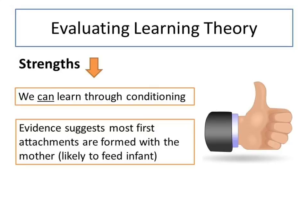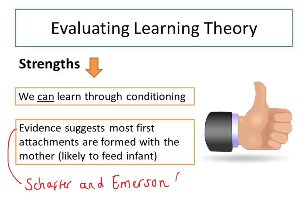Evidence has demonstrated that first attachments are usually formed between an infant and their mother. And as the mother is most likely to be feeding the infant and providing physical care, this provides some support for the theory. Schaefer and Emerson found that 65% of the infants in their longitudinal study formed their first attachment with their mother.